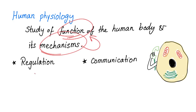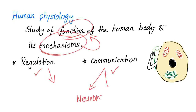Physiology is all about regulation and communication. Your body is well regulated and it has excellent communications. You have fast communications through the neurons and slow ones through the endocrine system.